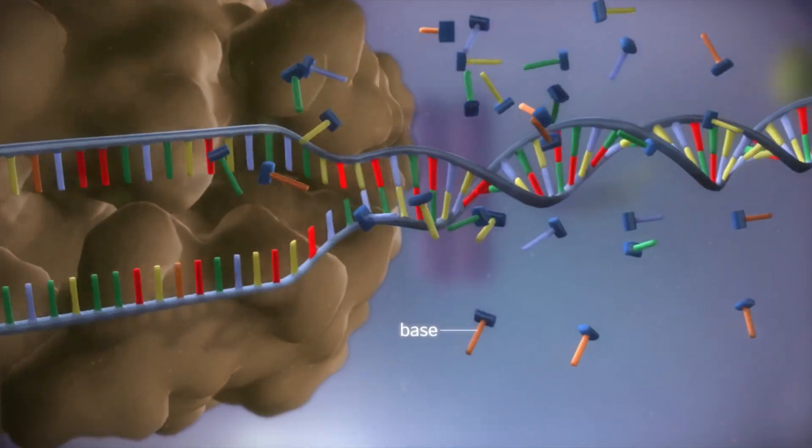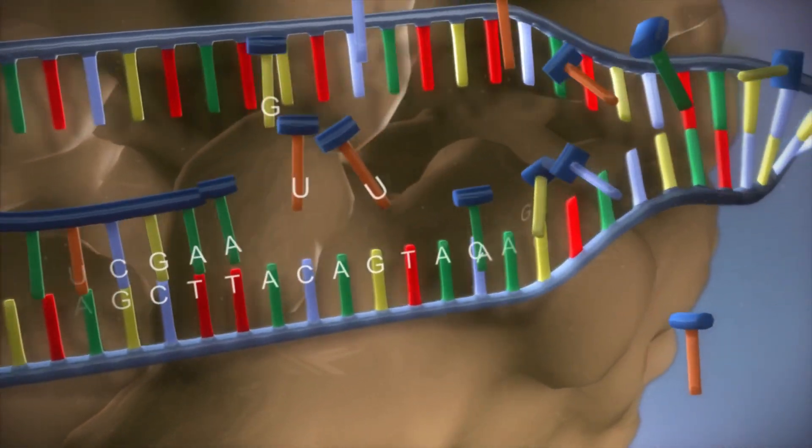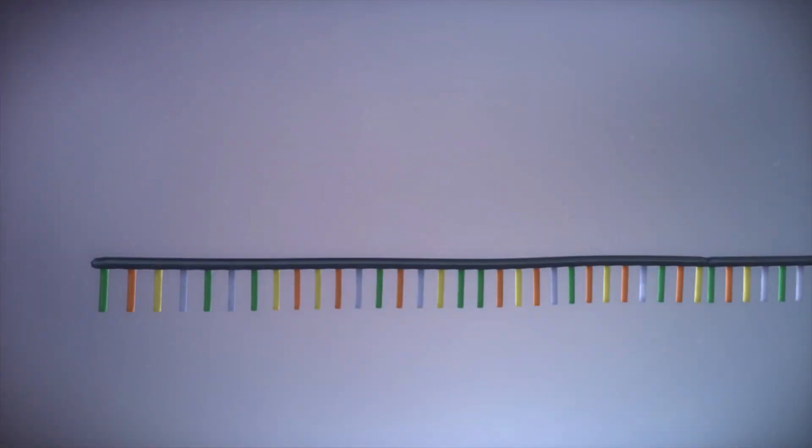First, the RNA polymerase reads the code in the DNA and turns it into messenger RNA. mRNA is very similar in structure to DNA except that it is single-stranded.